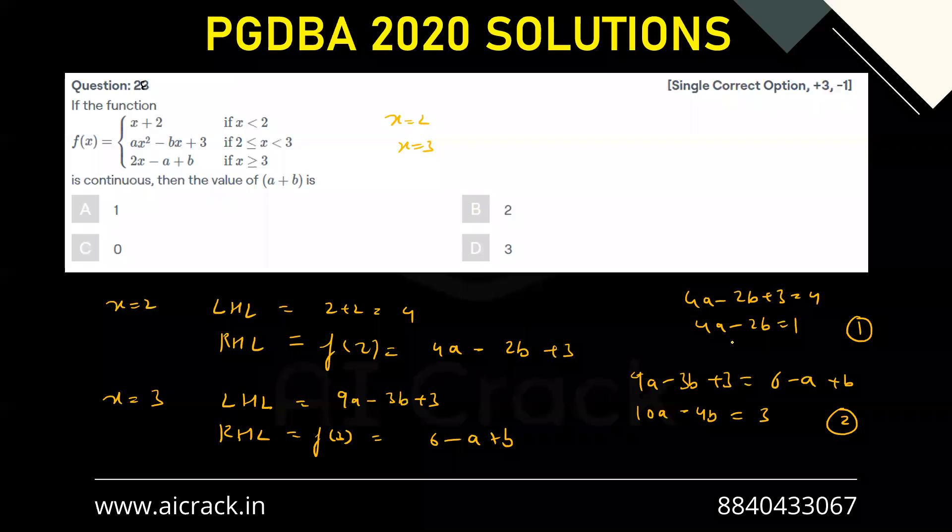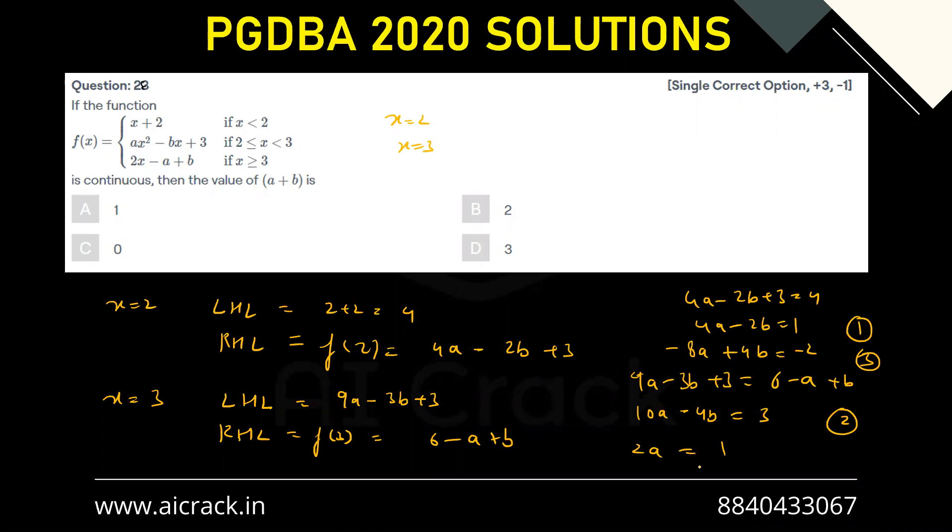Now if I multiply the first equation with minus 2, I'll be getting minus 8a plus 4b equals to minus 2. This is my third equation. If I'm adding third and second, I'll be getting 2a equals to 1.